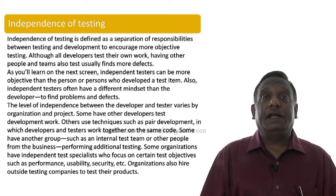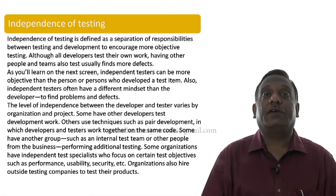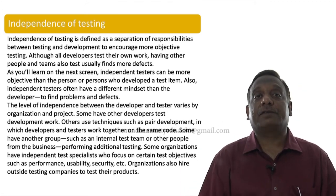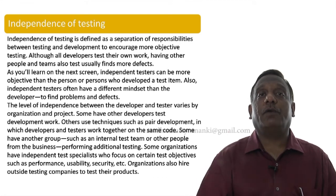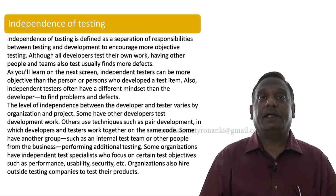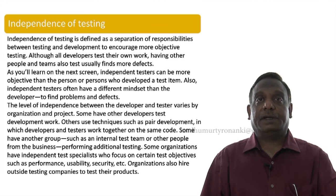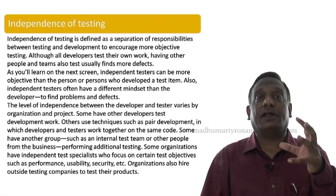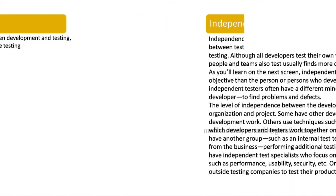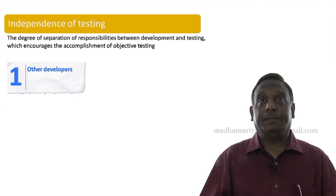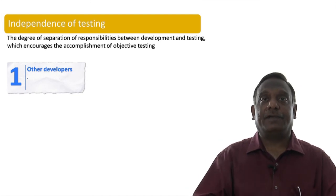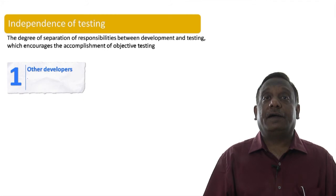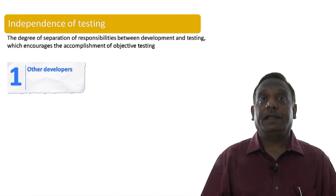We will talk about organizing independent testing in various ways, the degrees of independence, and the benefits and drawbacks of each type of organization in another lesson. For now, here is an overview: if a developer writes code and also takes responsibility for testing their own code, there is no independence. One way of organizing some independence is by separating testing responsibilities among different developers, but that only gives limited independence.